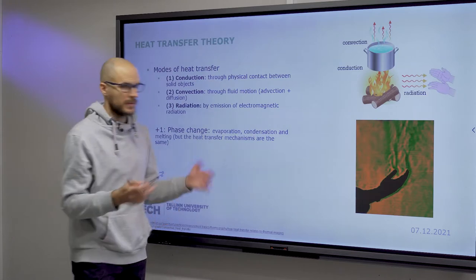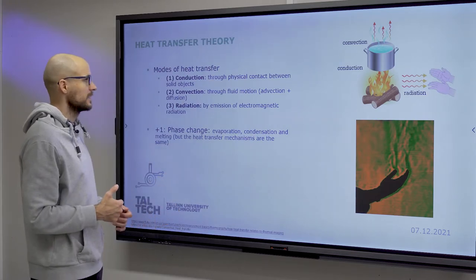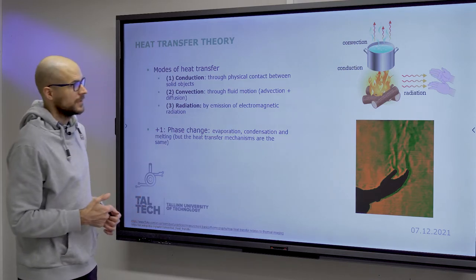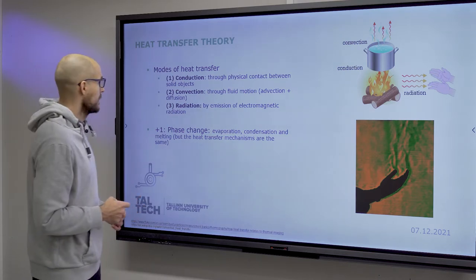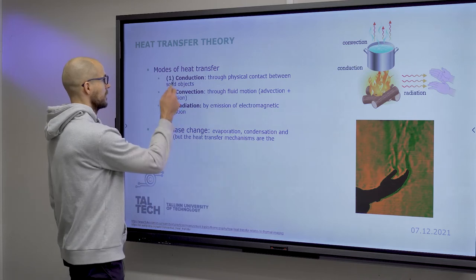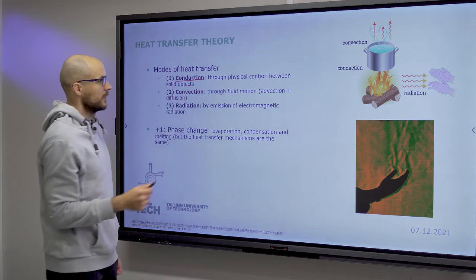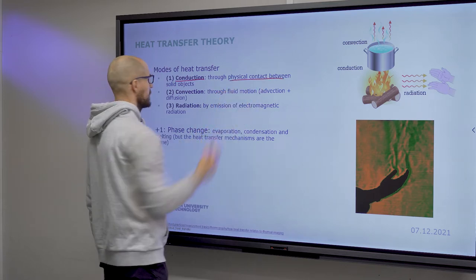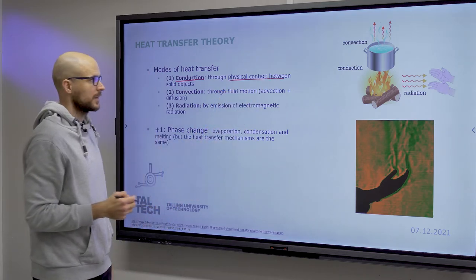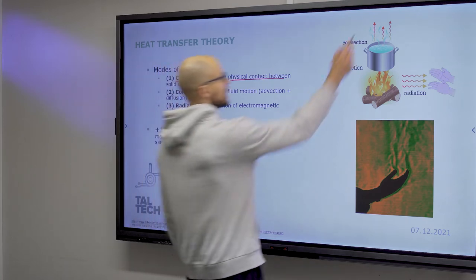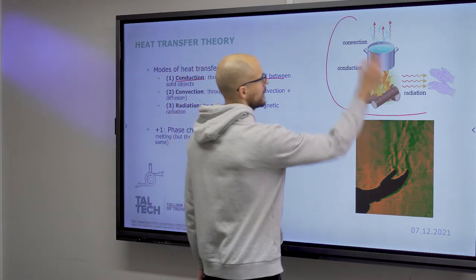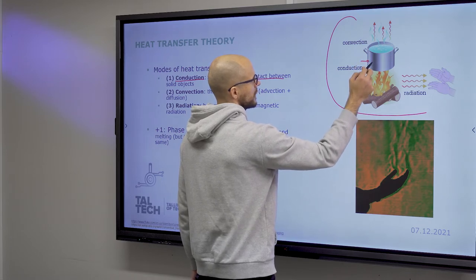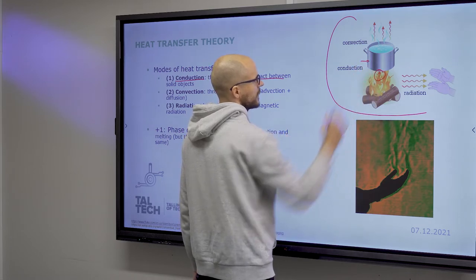We need to talk a little bit about the theory behind. There are three main modes of heat transfer plus one. The three main modes are conduction, which is heat transfer through physical contact between solid objects. If you look at this example drawing, conduction would be through the metal of this pot from the heat source.